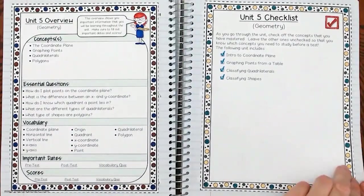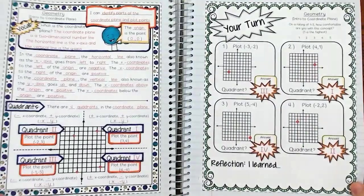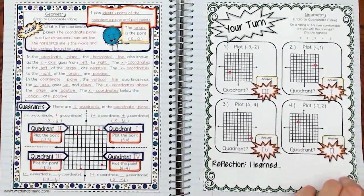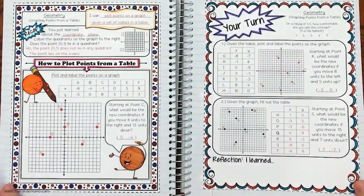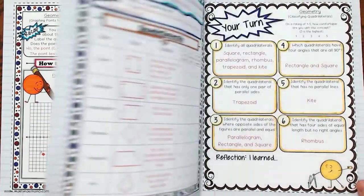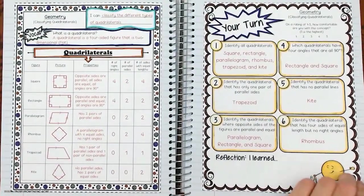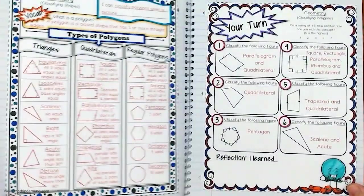The last unit is unit five, geometry. Students will be looking at the coordinate plane, graphing points from a table, classifying quadrilaterals, and classifying shapes.